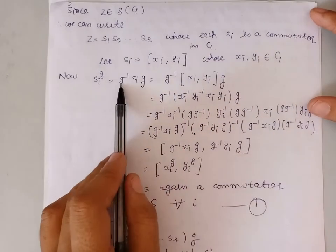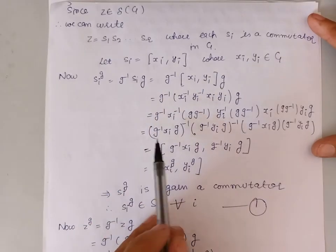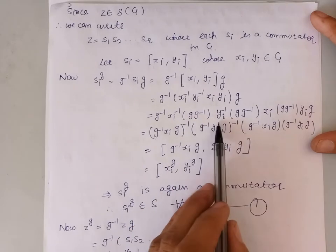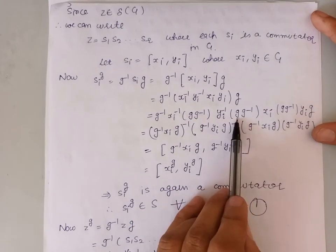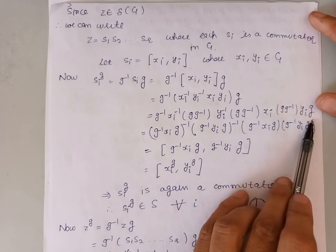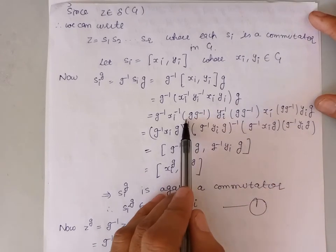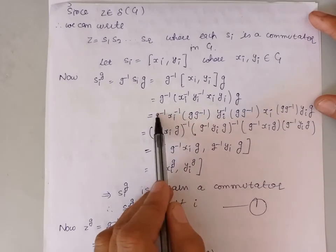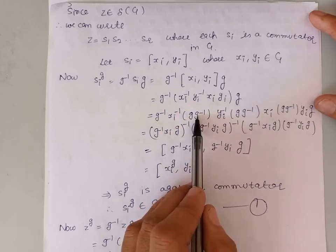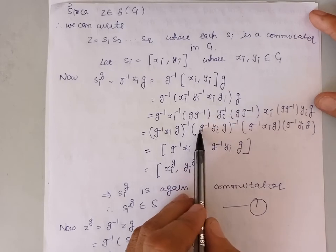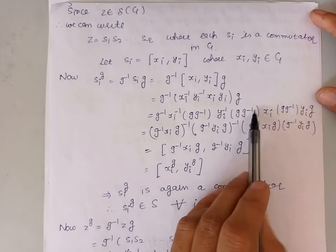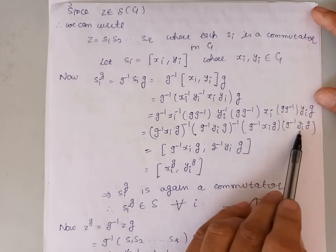Finally, G⁻¹SiG becomes (G⁻¹Xi⁻¹G)·(G⁻¹Yi⁻¹G)·(G⁻¹XiG)·(G⁻¹YiG). We can see that this part is the inverse of the element G⁻¹XiG, then we have (G⁻¹YiG)⁻¹, and then G⁻¹XiG, and the last term is G⁻¹YiG.